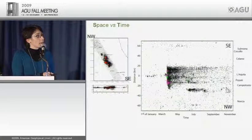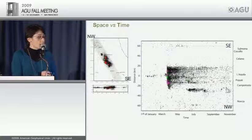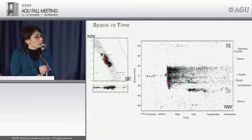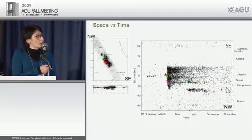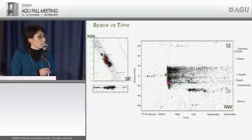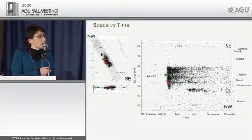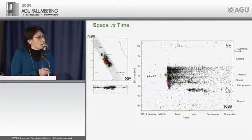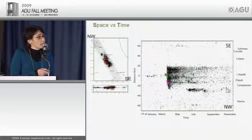We report the distribution in space and time of seismicity: a map view and a northwest-trending cross section, plus a space-time diagram. The time window runs from January 1, 2009, to last week. We can observe the foreshock sequence before the main shock on April 6, and that all larger magnitude events occurred in a very narrow time window. The lateral extent of the activated seismogenic volume is about 60 kilometers.